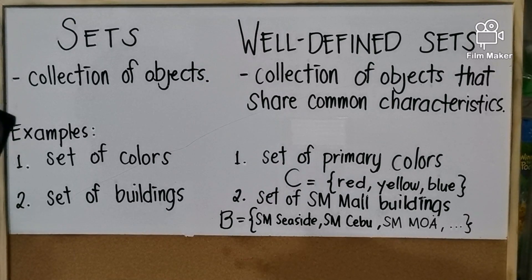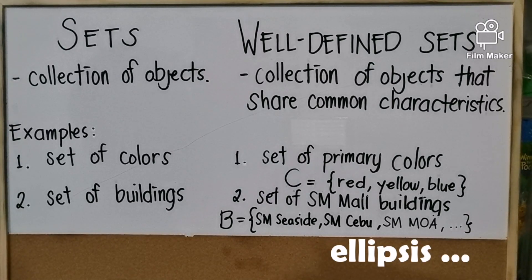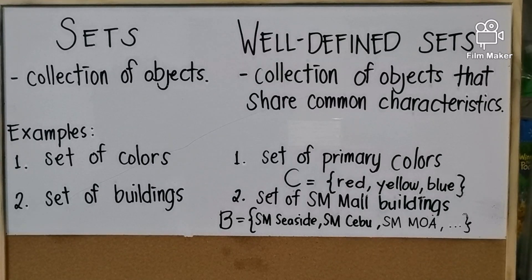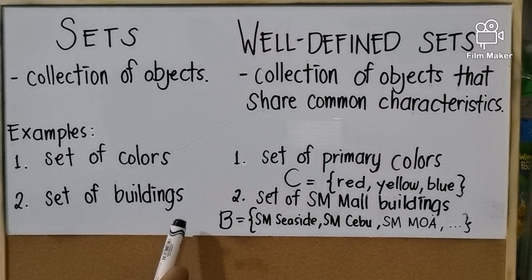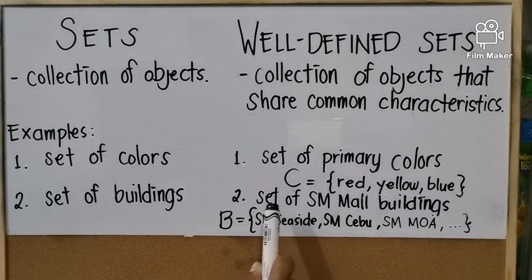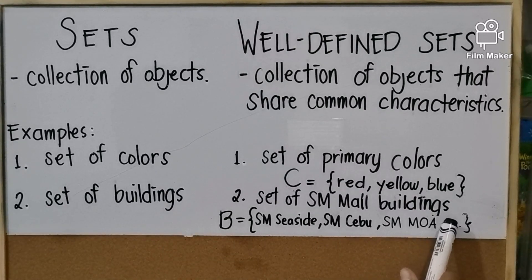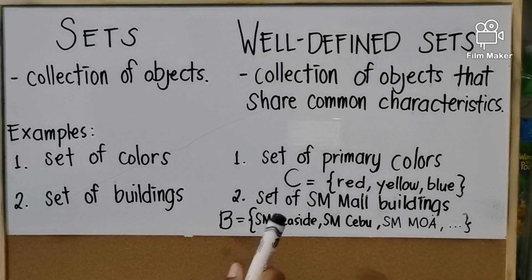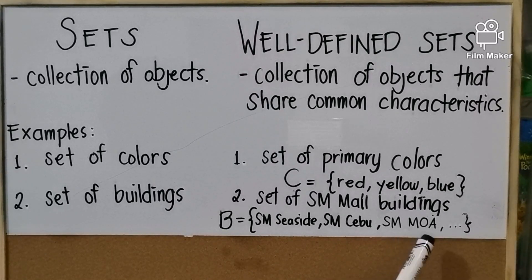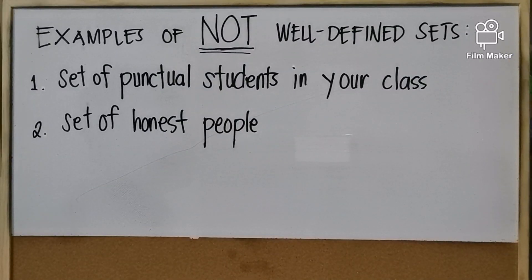These dots are called ellipses. For the second example, we have 'set of buildings,' and for a well-defined set that would be 'set of SM malls,' so we have SM Seaside, SM Cebu, SM MOA — Mall of Asia — and many more.